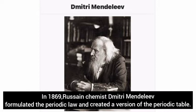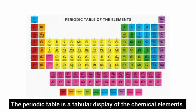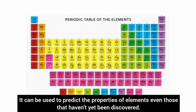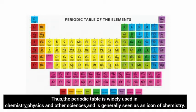Biotic deba. In this experiment, Russian chemist chemistry methodist formulates the Biotic law and creates a version of the Biotic deba. The Biotic deba is a tabular display of the chemical element. It can be used to reduce the properties or properties or elements, even those that haven't yet been discovered. Cinema trends in animal properties, appearance, and easy to understand. Thus, the Biotic deba is widely used in chemistry, physics, and other science, and is generally seen as an icon of chemistry.